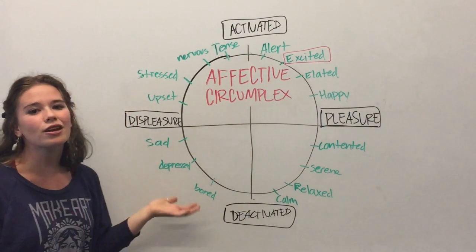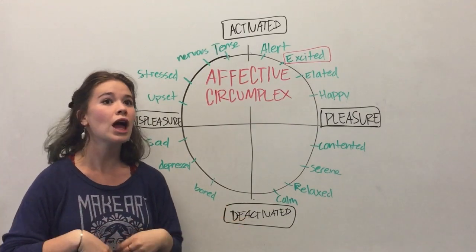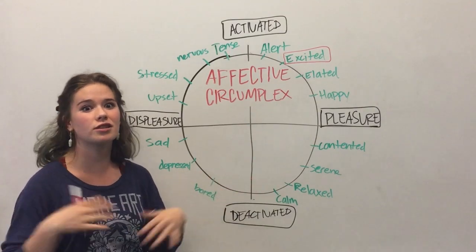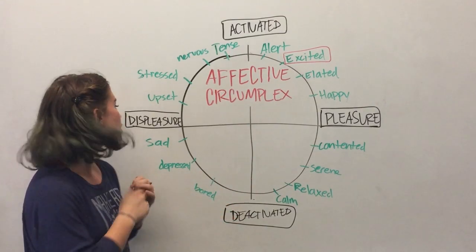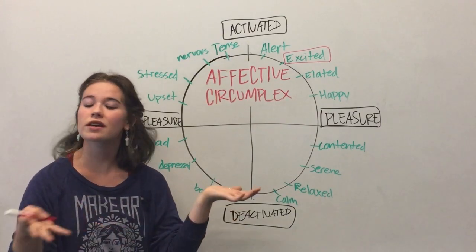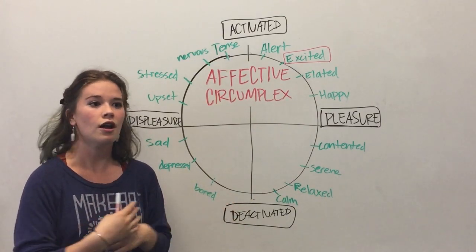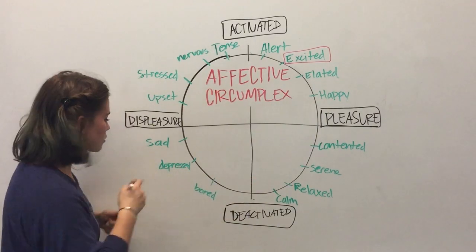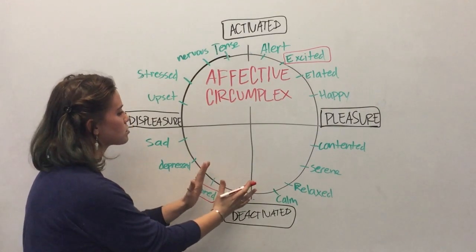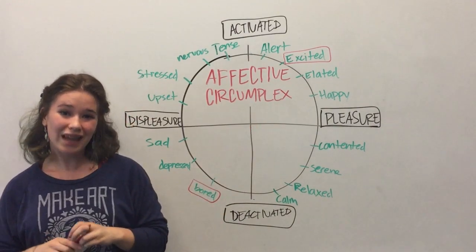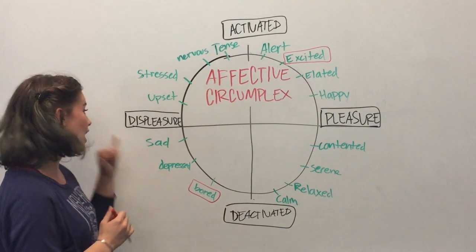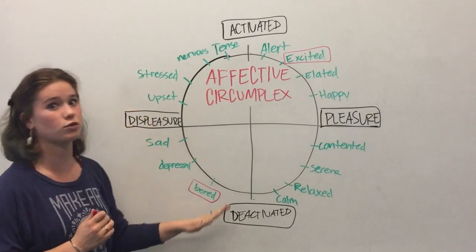For another example, let's say that you've been sitting at home all day with nothing to do and no entertainment. This is going to be deactivated because you have no stimulus and nothing to entertain yourself with. This is also going to be under the displeasure part of the spectrum, because there's been nothing to entertain you and you've just been bored all day. That's going to fall right here under bored. And because it's closer to the origin point, it's going to be a less intense kind of sensation, but because it is deactivated and displeasure, it's going to fall under this quadrant of the spectrum.